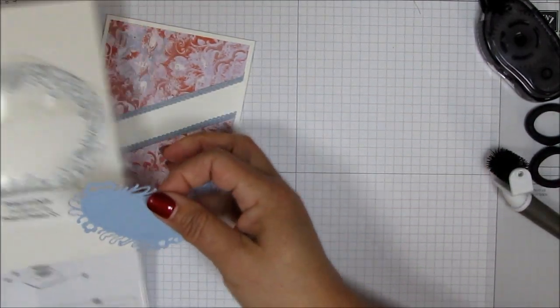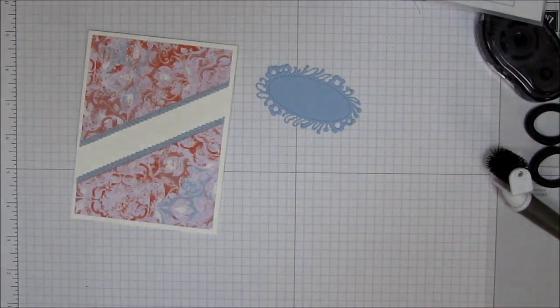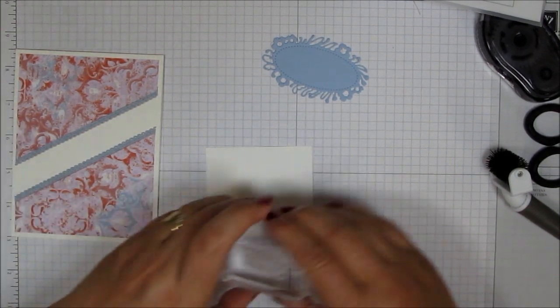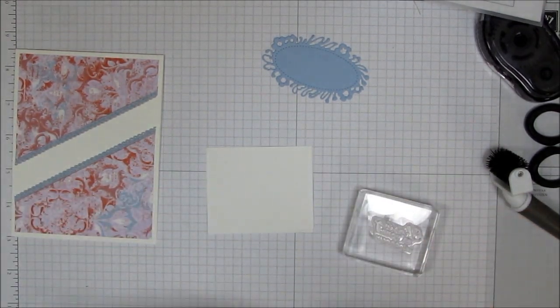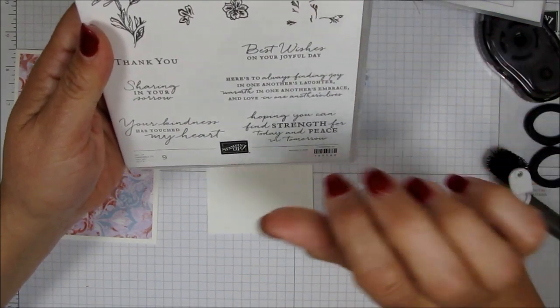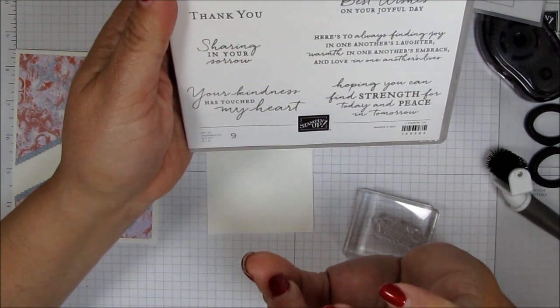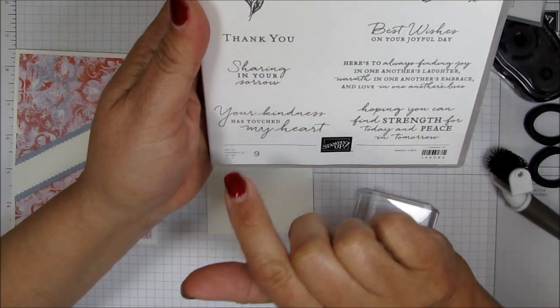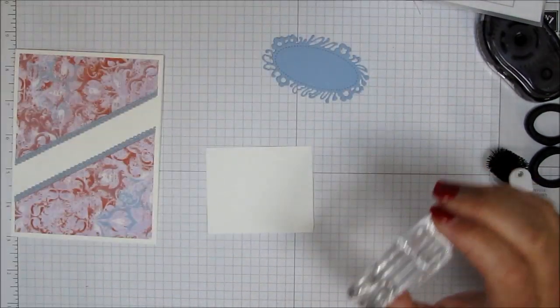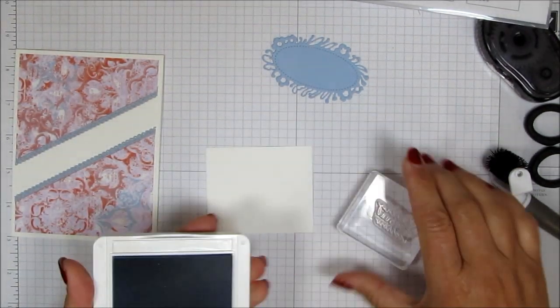And now you want to make your sentiment. And for that, I'm just using just a little piece of Whisper White cardstock. And I'm also going to be using the sentiment from the Path of Petals stamp set. This one, I'm going to be making a sympathy card. Sharing in your sorrow. That's the one I'm going to use. And so I'm just going to go ahead and use some, what is it? Seaside spray. I know that it's kind of a light color.